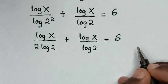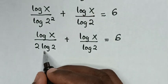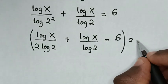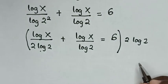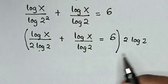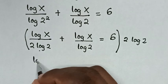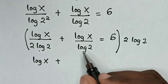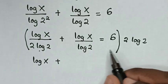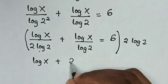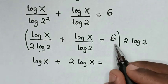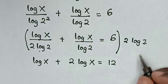To remove the fraction, we will multiply by 2 log of 2 on both sides. So we place brackets and multiply by 2 log of 2. From the first part, the 2 log of 2 cancels, leaving log of x. In the second part, log of 2 cancels with log of 2, leaving 2 log of x. Then on the right side, 6 times 2 is 12 log of 2.